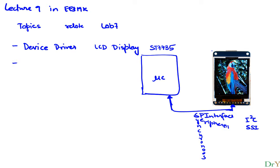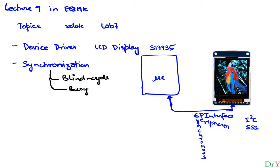The second thing we're going to learn as part of this lecture, as it relates to the lab, is synchronization. When we have a device that we are talking to, it's possible that a device is faster than the microcontroller or slower than the microcontroller. We need a way to bridge this speed mismatch, and we will see three different ways: blind cycle synchronization, busy wait synchronization, or interrupt-based synchronization.